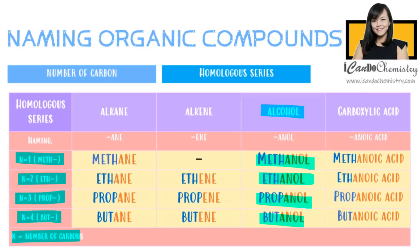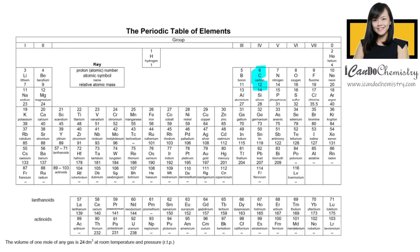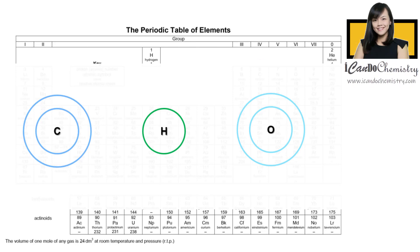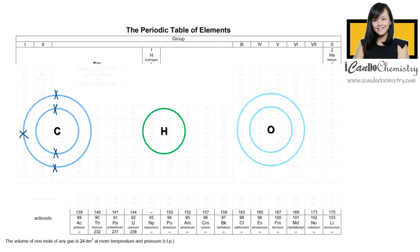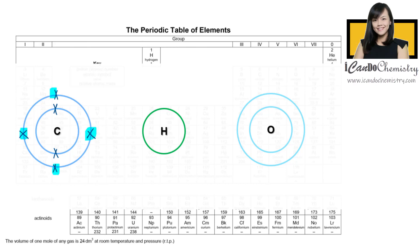How do we draw the structures of alcohols? When we show all the bonds between the atoms in a molecule, we are writing down the full structural formula of the organic compound. This is carbon in the periodic table. It has six electrons and it will use its four outermost electrons for bonding to achieve stable noble gas octet electronic configuration.